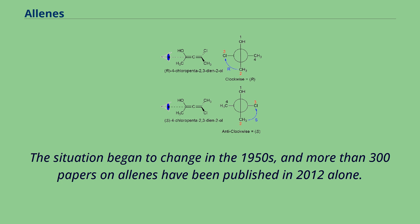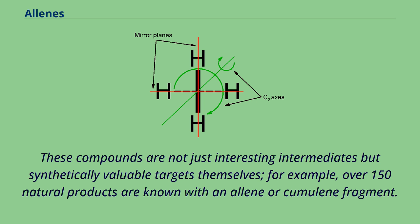The situation began to change in the 1950s, and more than 300 papers on allenes have been published in 2012 alone. These compounds are not just interesting intermediates but synthetically valuable targets themselves. For example, over 150 natural products are known with an allene or cumulene fragment.